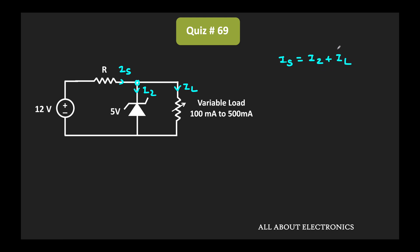This Il is variable — that means it can vary between 100 mA to 500 mA. We have been given that this Zener diode is the ideal diode and the Zener knee current is almost zero.